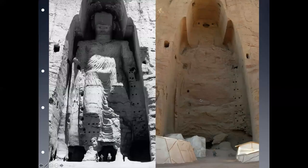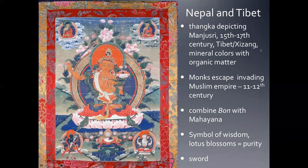That was a terrible result, but the Bamiyan Buddha had already had its influence on art in places like China. Moving to Nepal and Tibet — this is a thangka, and it's one of the few works of art we discuss in class that I actually own. I have one on my wall at home. A thangka is typically rolled up and carried from place to place; it's used for didactic purposes — to teach people about Buddhism.